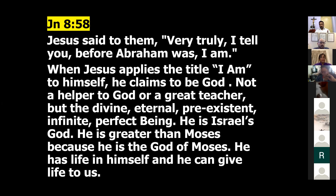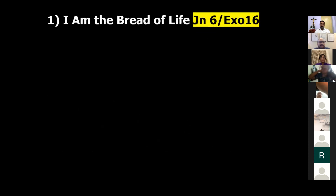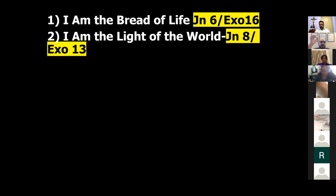The seven I am statements are predominantly taken from the Old Testament, and John connects them to show that Jesus is that I am. Number one: 'I am the bread of life' — John 6, prefigured in Exodus 16. Number two: 'I am the light of the world' — John 8, prefigured in Exodus 13, where God was a pillar of cloud by day and pillar of light by night. Number three: 'I am the door' — John chapter 10, prefigured in Exodus 12.